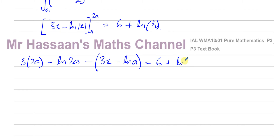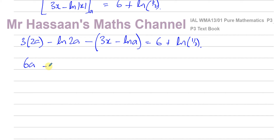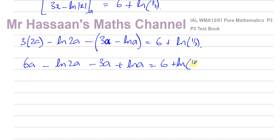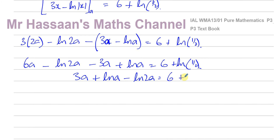Equals 6 plus ln(1/2). So now we can simplify: 6a minus ln(2a) minus 3a plus ln(a) equals 6 plus ln(1/2). So 6a minus 3a gives 3a. Then I have ln(a) minus ln(2a), which I'll write as ln(a over 2a), equals 6 plus ln(1/2).